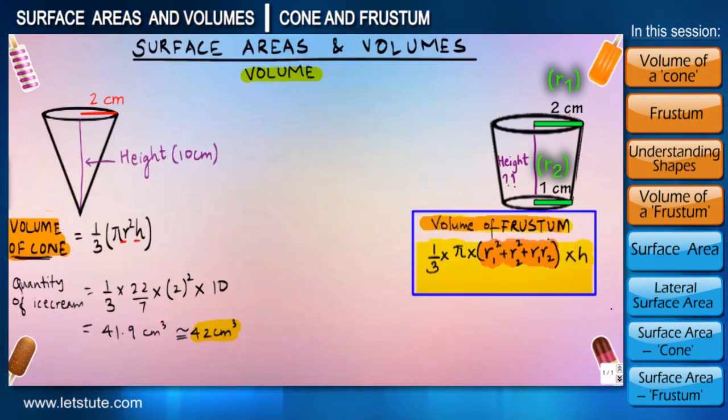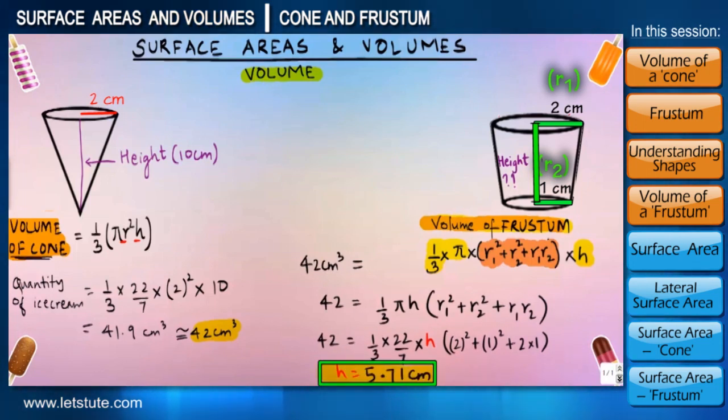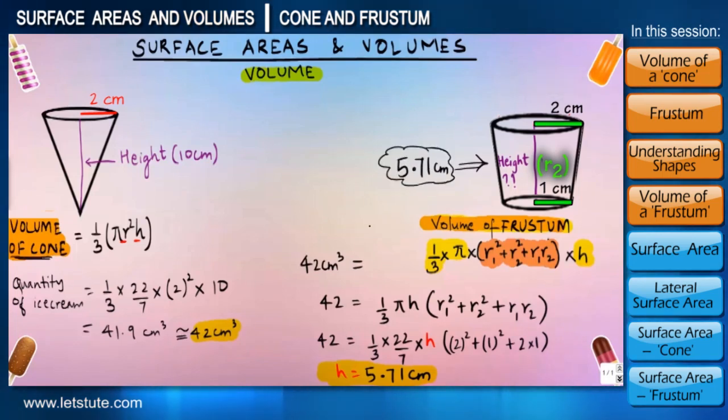Now that we know the volume of cup or frustum, so let us equate it with the volume of cone and try to find the height of the cup, and by doing so the height will come out to be 5.71 centimeters. In order to match the volume of the cone, the parameters of the cup should be height 5.71 centimeters, upper and lower radii 2 centimeter and 1 centimeter respectively.